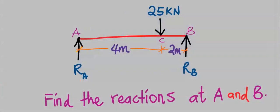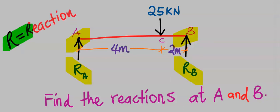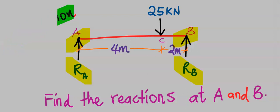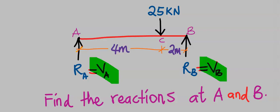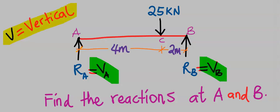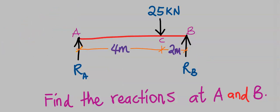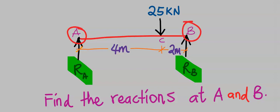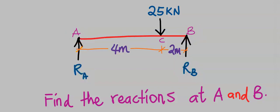In this question you are required to find the reaction forces at point A and point B, which are R subscript A and R subscript B, where R simply means reaction forces. At times instead of R we can use V, where V simply means vertical forces. In this video we are going to leave it as R subscript A and R subscript B, meaning the reaction forces at A and at B respectively.